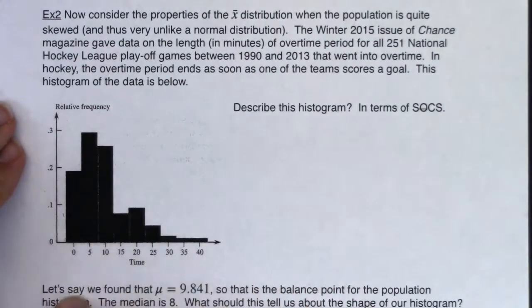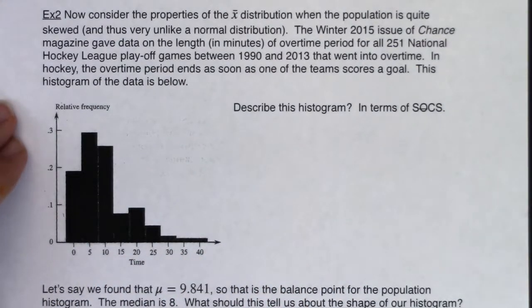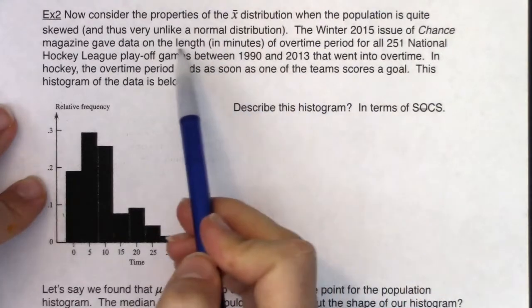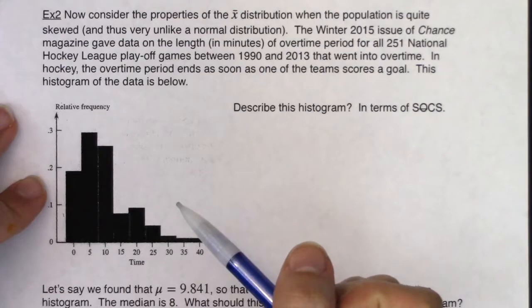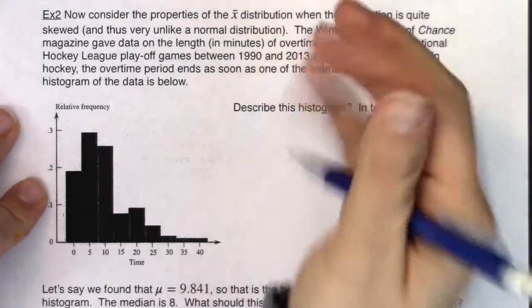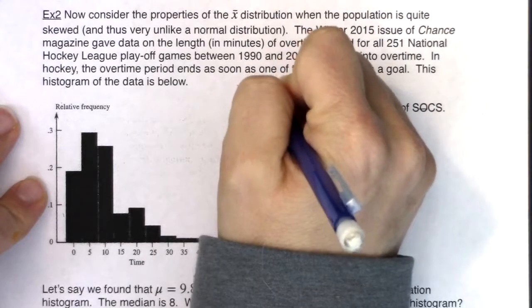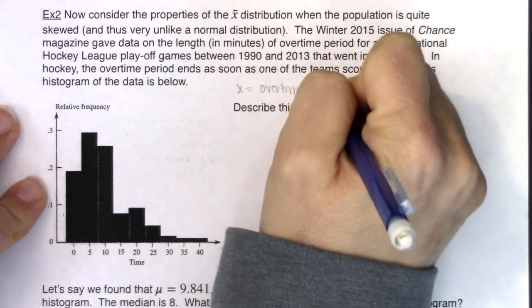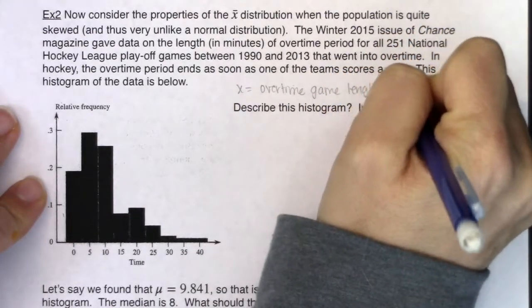This is like a chapter two problem, but let's listen for what the variable is. In this problem, you hear it right here — we're talking about the length of overtime games in NHL hockey. So our variable was overtime game length, and the units were minutes.